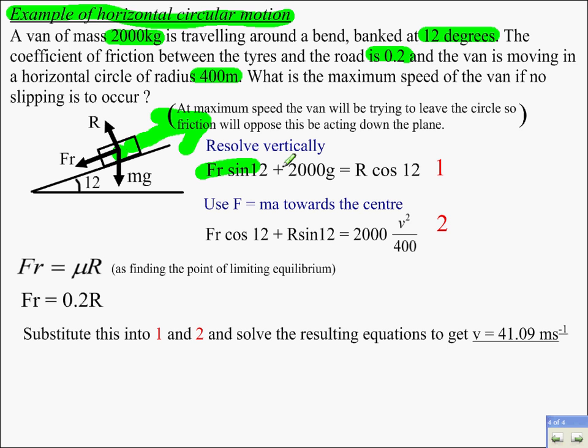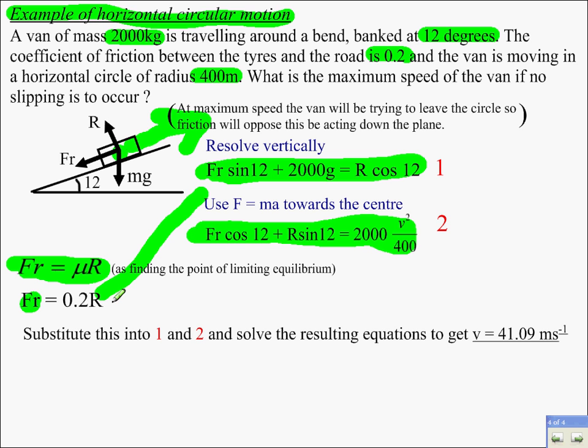We resolve vertically to get equation 1. We use F equals ma towards the centre to get equation 2. And, Fr equals μR as finding the point of limiting equilibrium. Fr equals 0.2R. Substitute this into 1 and 2 and solve the resulting equations to get V equals 41.09 metres per second.